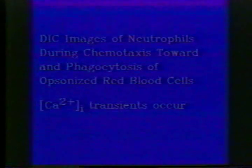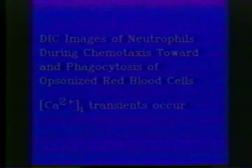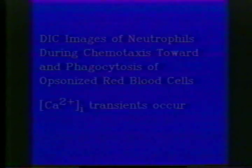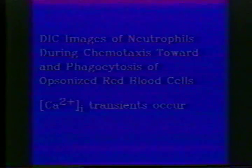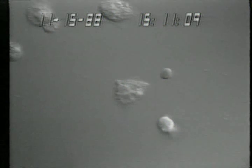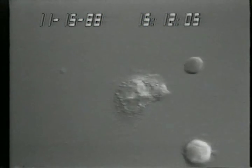We were then interested in determining the significance of the cytosolic free calcium transients since they occurred in every migrating neutrophil which we ever observed. To do this, we made DIC recordings of cells migrating under different conditions of altered internal and external calcium. Just as a reminder, we will now show images of what neutrophil migration usually looks like in these chambers in the presence of external calcium.